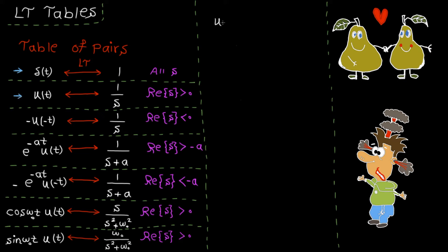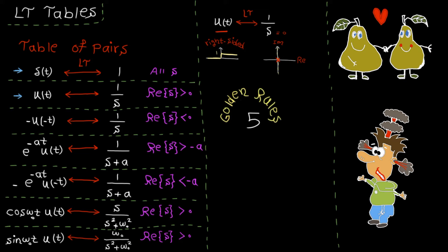Next signal is u(t). We already proved the Laplace transform of u(t) is 1 over s. The Laplace transform has one pole at the origin. To find the ROC we draw a vertical line on the pole — this line is a strict boundary as the ROC cannot include any poles. Since u(t) is zero for t less than zero and extends to infinity, it's clearly right-sided. Therefore the ROC is right-sided, i.e., Re(s) > 0.